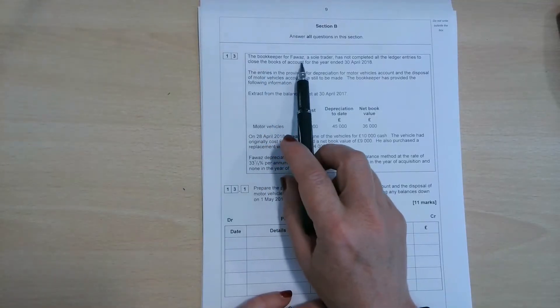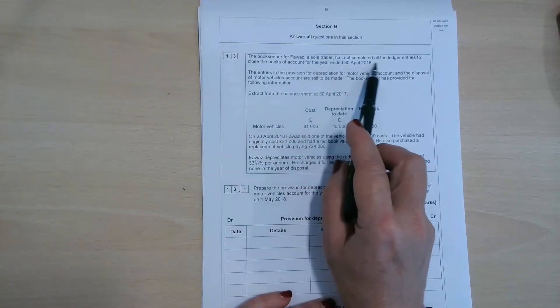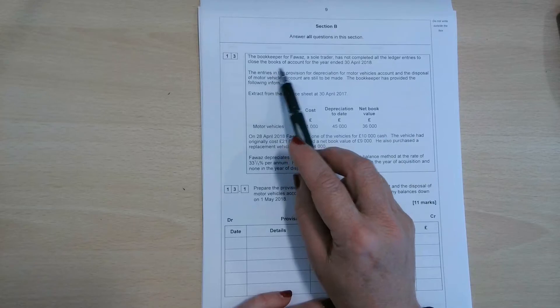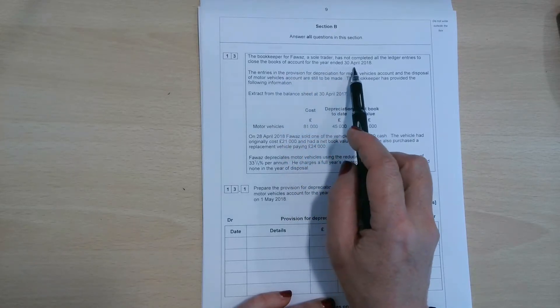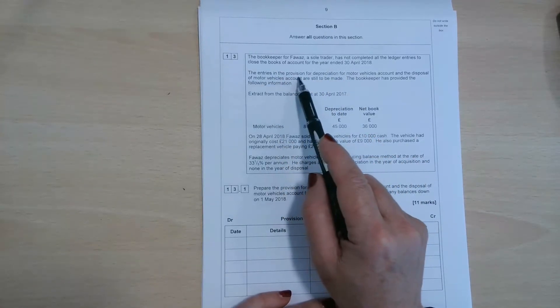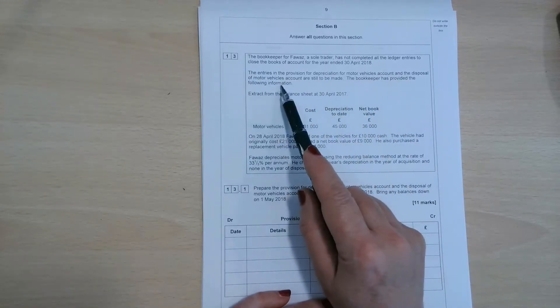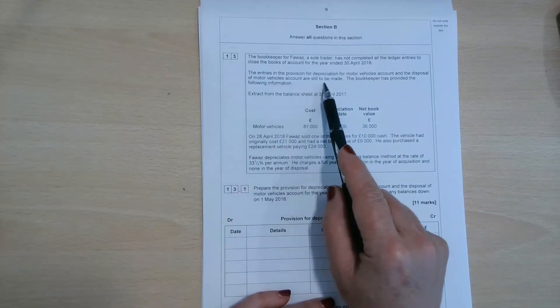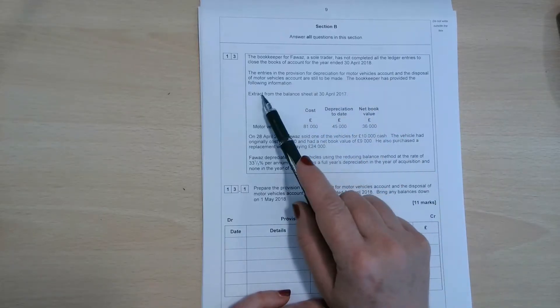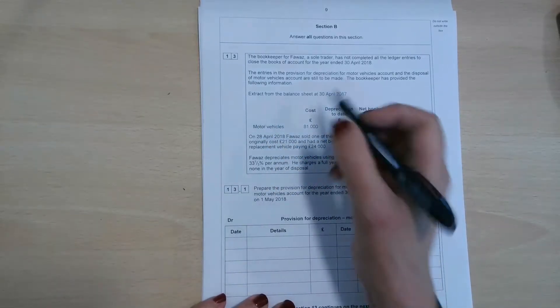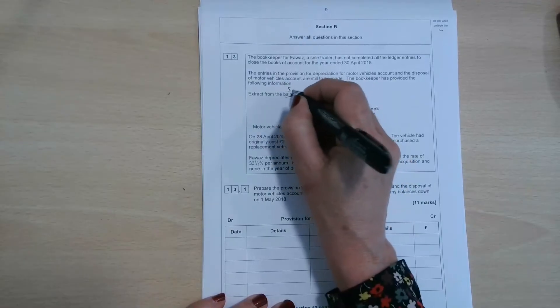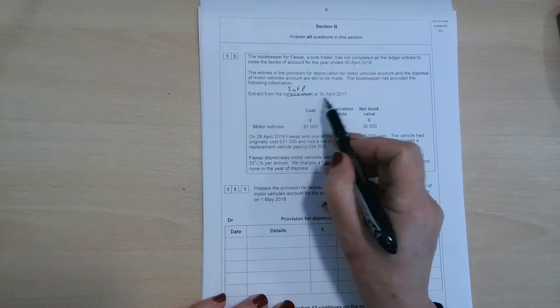we'll have a little look through this. So the bookkeeper for FOWAS, a sole trader, has not completed all the ledger entries to close the books of account for the year ended 30th of April 2018. The entries in the provision for depreciation for motor vehicles account and the disposal of motor vehicles account are still to be made. The bookkeeper has provided the following information. So we've got an extract from what should be the statement of financial position, not the balance sheet,